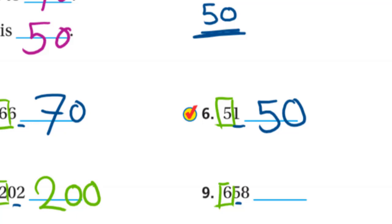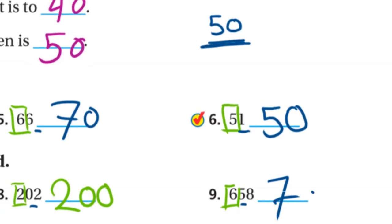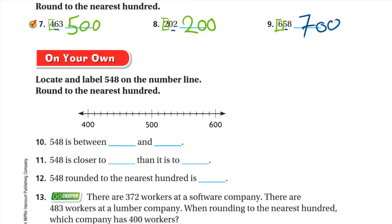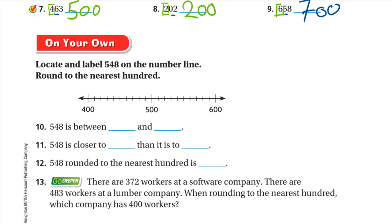Since 5 is one of the strong digits (5, 6, 7, 8, 9), the 6 increases by 1, so 658 rounded to the nearest hundred is 700. Hope you guys understand the lesson. If you are in my class, I'll check your on-your-own questions with you on the live session. Have a nice day and goodbye.